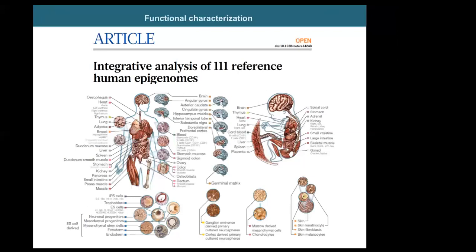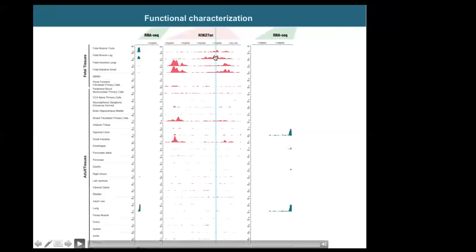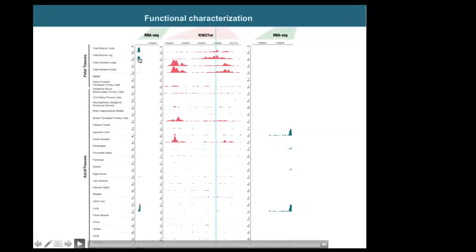We attempted to functionally characterize this variant, which is located in an intergenic region. We analyzed Roadmap Epigenomics data from 111 reference epigenomes. The locus zoom shows this variant is located in a region with epigenetic marks for active enhancers, and these marks correlate with expression of angiotensin receptor 2 (AGTR2). Since angiotensin receptor 2 has been related to hypertension and type 2 diabetes, we believe it is the most likely candidate effector gene.